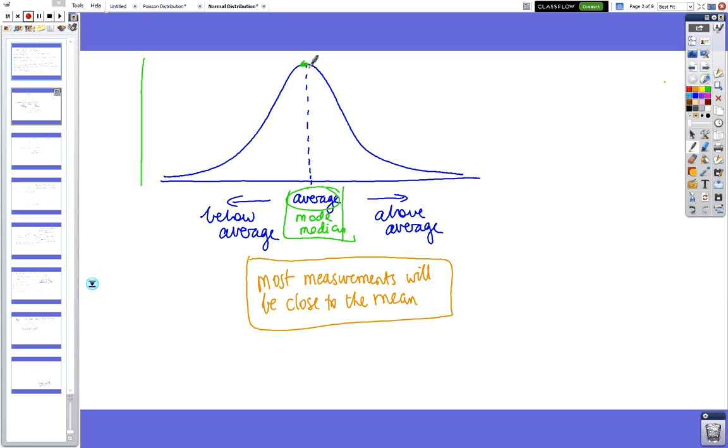So that point there, when you read off there's a number, that'll be the mode. This is the highest point, so the scores are distributed equally either side. Anything to the right is above average and anything to the left is below average. Most measurements are always closest to the average.